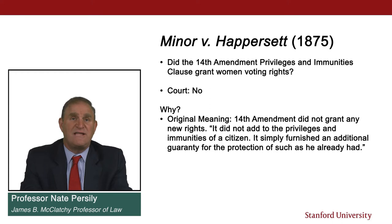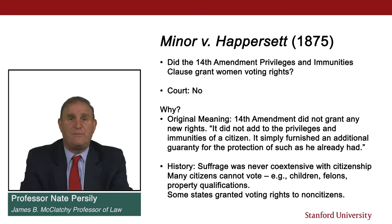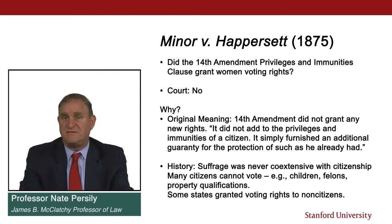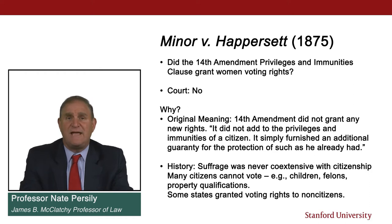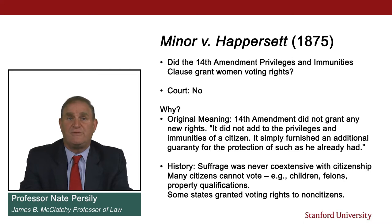The court held that suffrage was never coextensive with citizenship — voting rights and citizenship don't necessarily overlap. At the time of the founding, and even today, many citizens cannot vote: children, people with felony convictions, and those subject to property qualifications at the time of the Constitution's formation. You cannot say the original privileges and immunities of citizenship included voting rights, given how many citizens lacked them. Non-citizens were sometimes given voting rights, left to state legislatures or localities to decide.